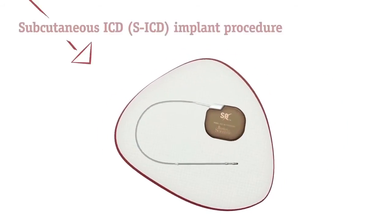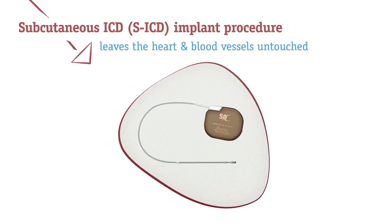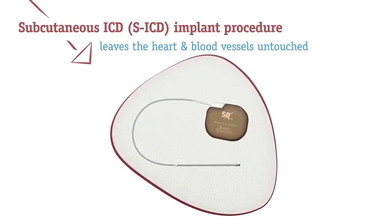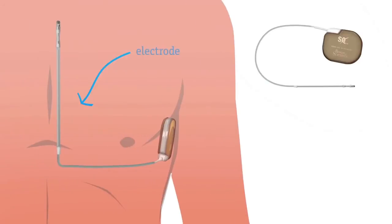The subcutaneous defibrillator or SICD leaves the heart and blood vessels untouched at all times. Its electrode is placed just under the skin above the breastbone and the pulse generator is implanted on the left side of the chest.